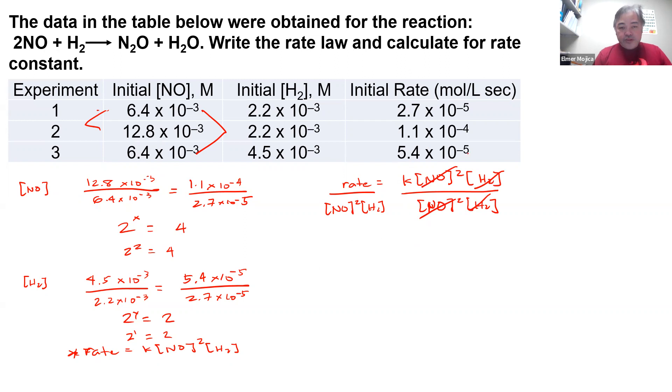And if we're going to use the same value here, the thing that we need is if we use experiment 1, we need to make sure that we use all the values that we have, not a mix up of experiment 1, 2, or 3. So if I have 2.7 times 10 to the negative 5, I use here 6.4 times 10 to the negative 3 squared times 2.2 times 10 to the negative 3. So I will get around, if I'm not mistaken, 300.